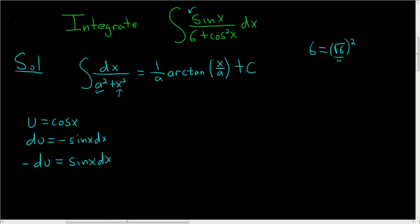And now we can rewrite our integrand as follows. Sine x dx, that's up here, and that's equal to negative du. So we can pull the negative out, and then we have du. And in the denominator, we can write 6 as the square root of 6, quantity squared, plus cosine squared. Well, cosine is u, so this will be u squared.